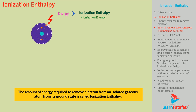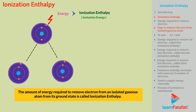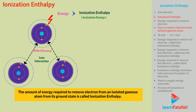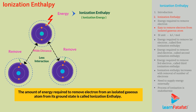In the gaseous state, atoms are separated from each other at wider distances. Due to this, interaction between atoms is negligible. So atoms are considered as isolated, and it is easy to remove an electron from an isolated gaseous atom.